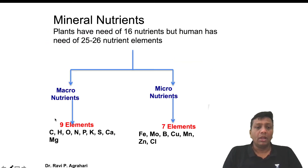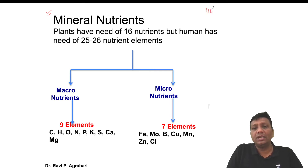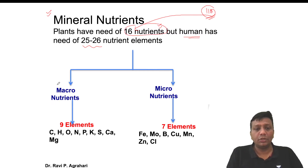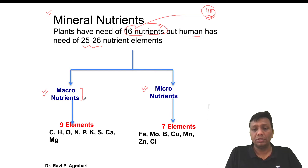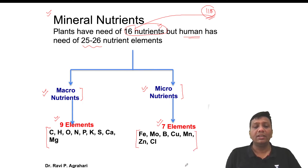Now coming to the second part: mineral nutrients. Out of 118 to 120 elements discovered in chemistry, 16 elements and nutrients are required for the growth of plants, while around 25 to 26 are responsible for growth of human beings. These 16 nutrients are divided into two groups: macronutrients and micronutrients. Macronutrients are required in large amounts; micronutrients are required in smaller amounts. The nine macronutrients are: carbon, hydrogen, oxygen, nitrogen, phosphorus, potassium, sulfur, calcium, and magnesium. The seven micronutrients are: iron, molybdenum, boron, copper, manganese, zinc, and chlorine.